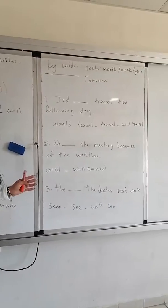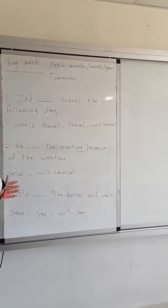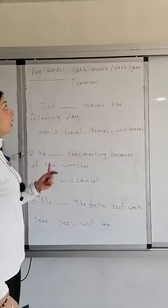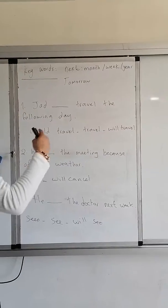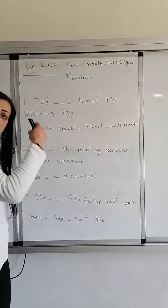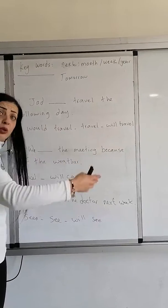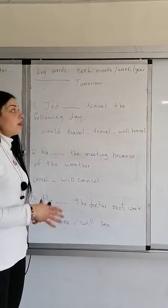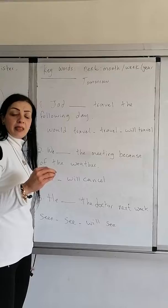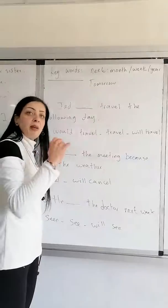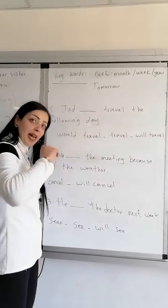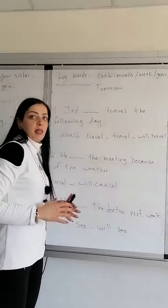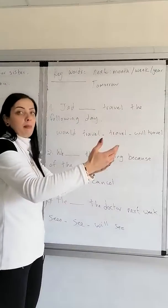There are certain time words that we use, like 'next month,' 'next week,' 'next year,' 'the following two days,' and 'tomorrow.' Anything that indicates that I'm talking about the future — about an action that is not happening yet, it might happen.